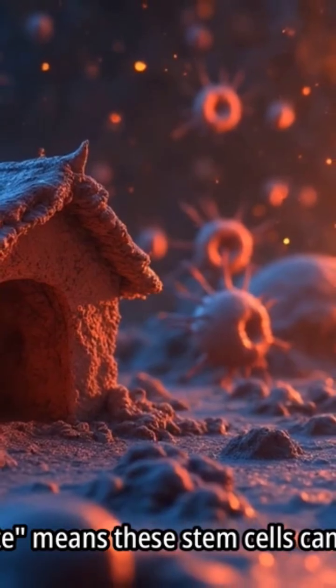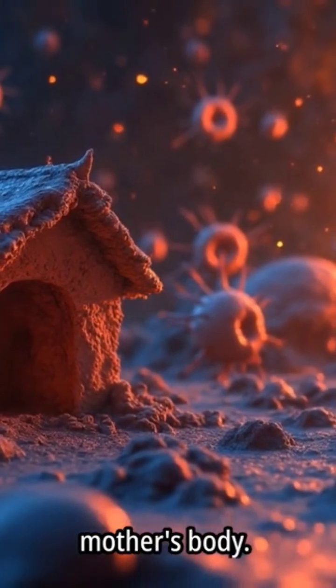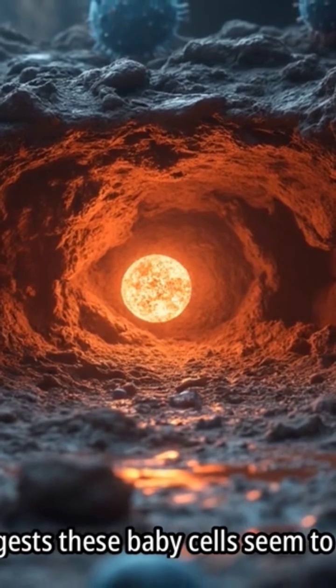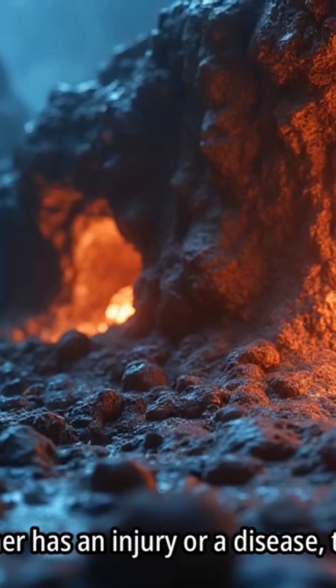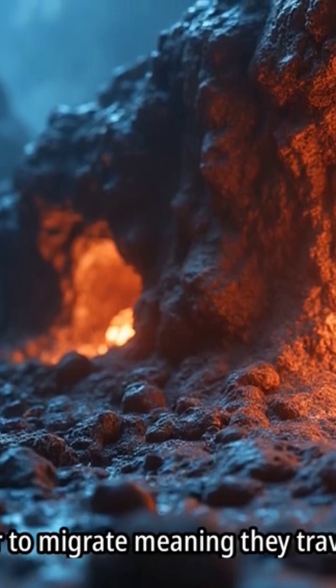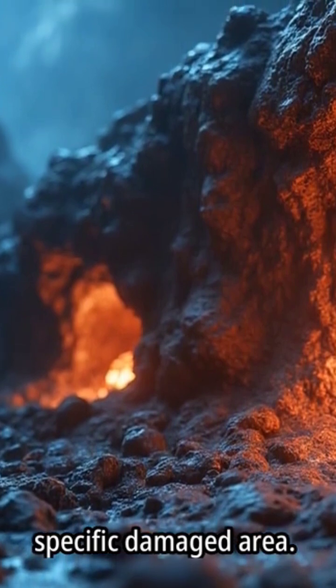Differentiate means these stem cells can transform or change into specific types of cells needed in the mother's body. Research suggests these baby cells seem to have a knack for finding trouble spots in the mother's body. If the mother has an injury or a disease, these baby cells appear to migrate, meaning they travel, to that specific damaged area.